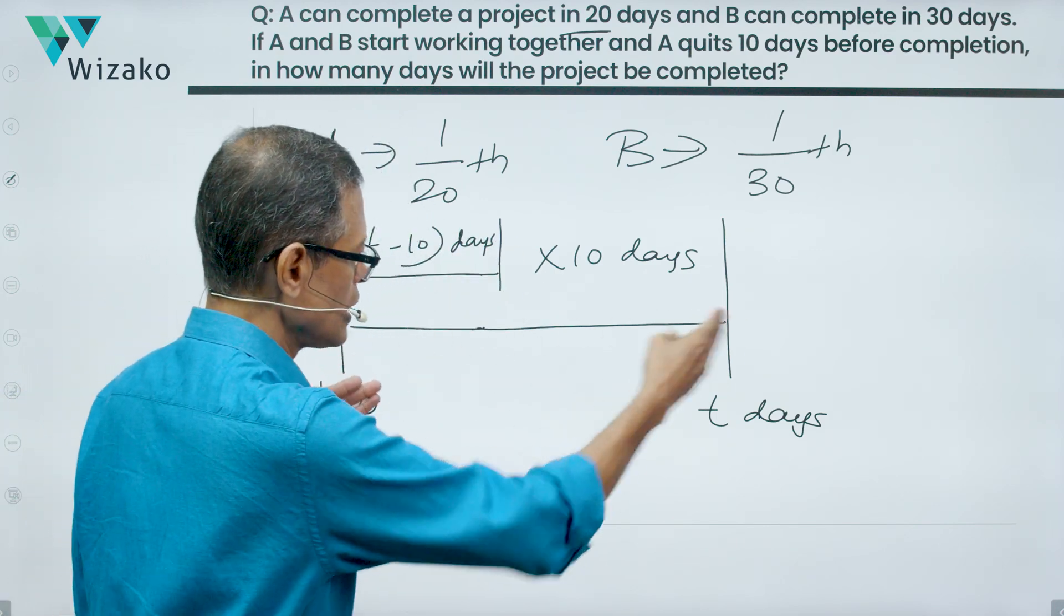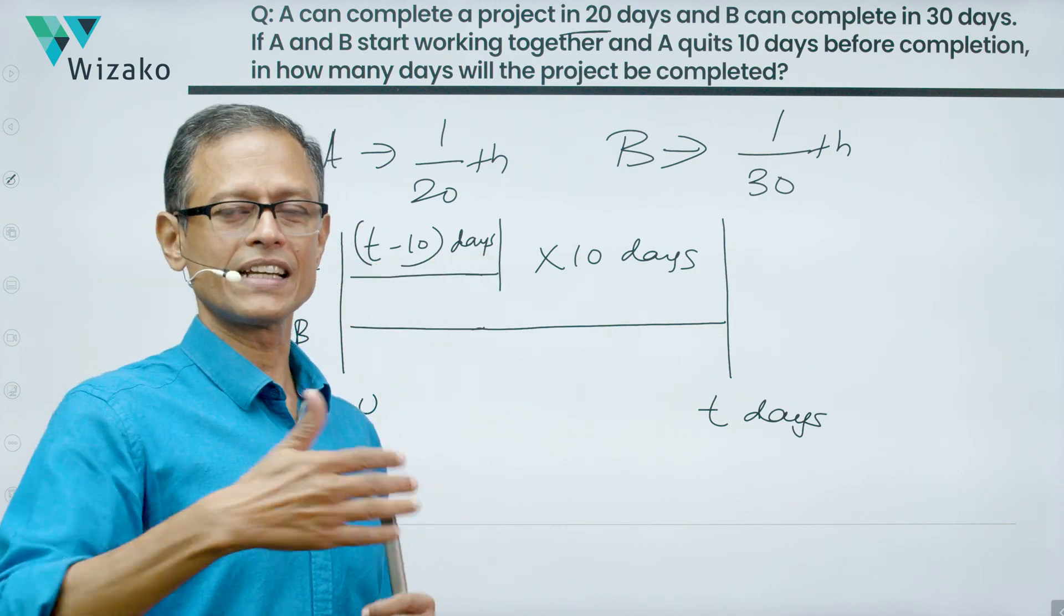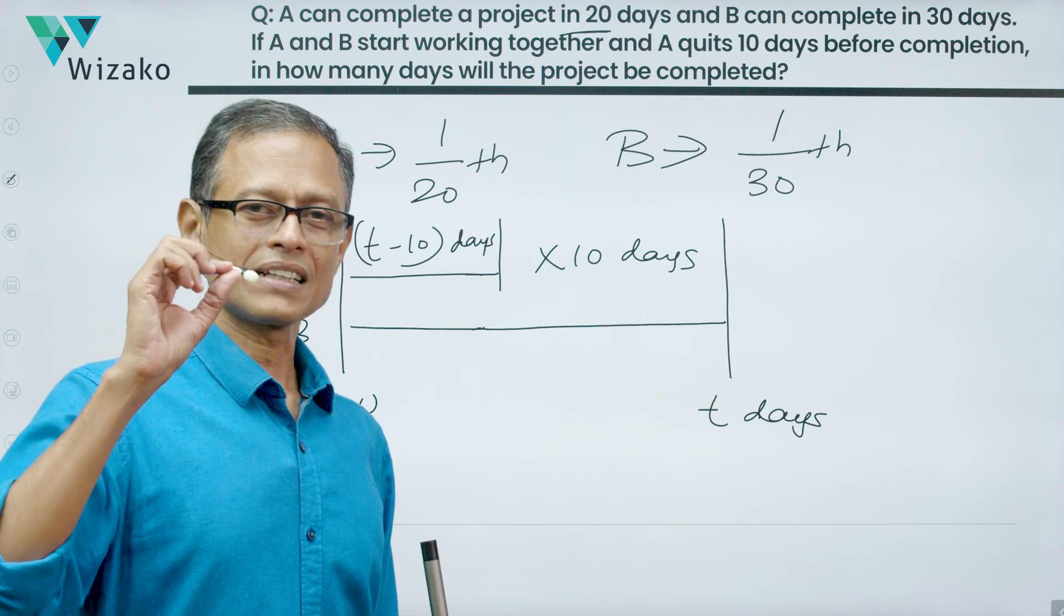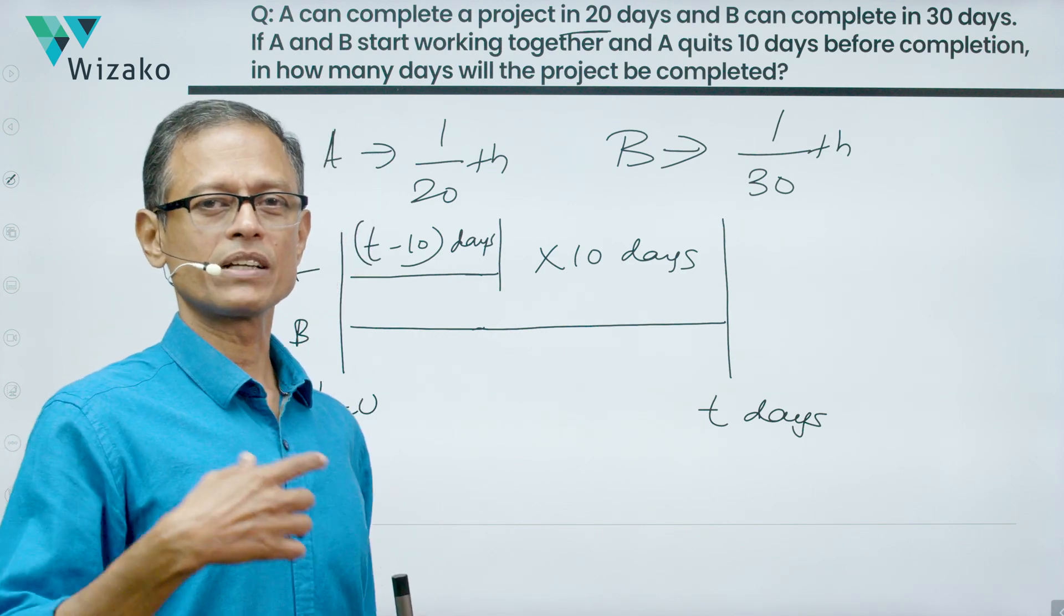So B works all T days, A works the first T minus 10 days. The last 10 days, A does not work. Once you've got clarity on this, framing the equation becomes that much easier.